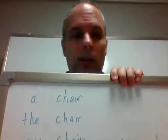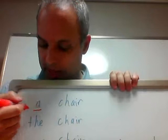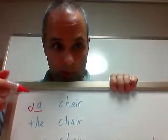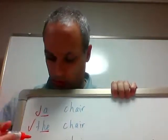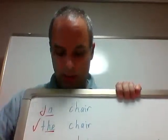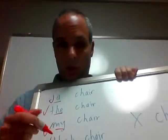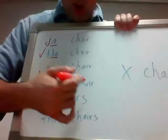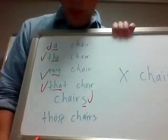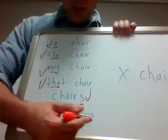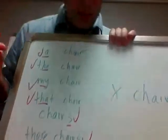For example, I put down the word 'chair' here. So 'a chair' — that is talking about the chair, that's good. 'The chair' — that's good. 'My chair,' 'that chair' — all of these are good nouns. 'Chairs' — that's also good. 'Those chairs' — the word 'that' and the S are all talking about chairs. These are all good.